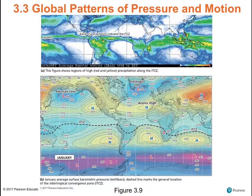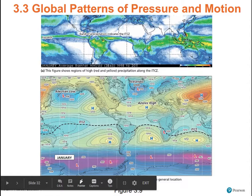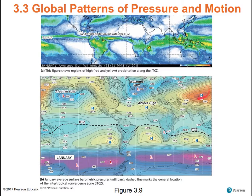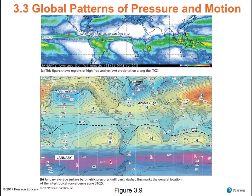In January typical surface conditions, you can see the ITCZ along the equator, very high pressure over Siberia because it's cold, the Icelandic low, the Aleutian low, the Hawaiian or Pacific high, and the Azores high. There's a really good correlation between the ITCZ and lots of rain, and the subtropical highs with dry conditions — subtropical high, dry conditions, repeatedly across all ocean basins.